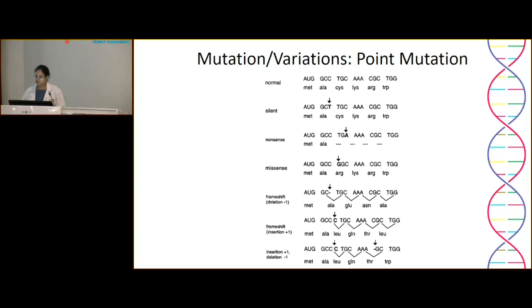A silent mutation is when there is a change in the nucleotide but the amino acid is not changed. A nonsense mutation is when the nucleotide change results in the creation of a stop codon, terminating the protein abruptly. A missense mutation is when the nucleotide change results in an amino acid change. Frameshift mutations result from deletions or insertions that change the reading frame, which may result in an elongated or shorter protein.